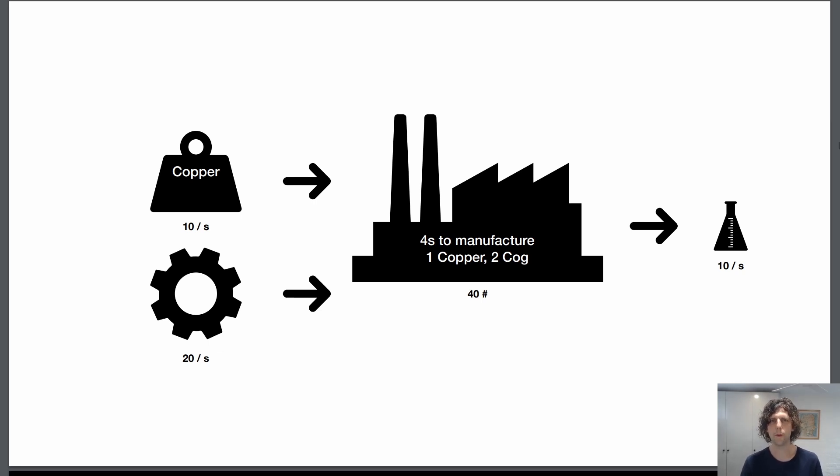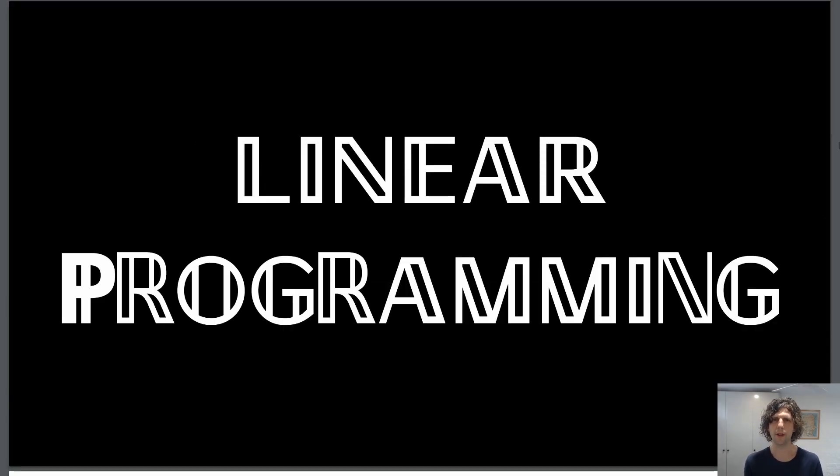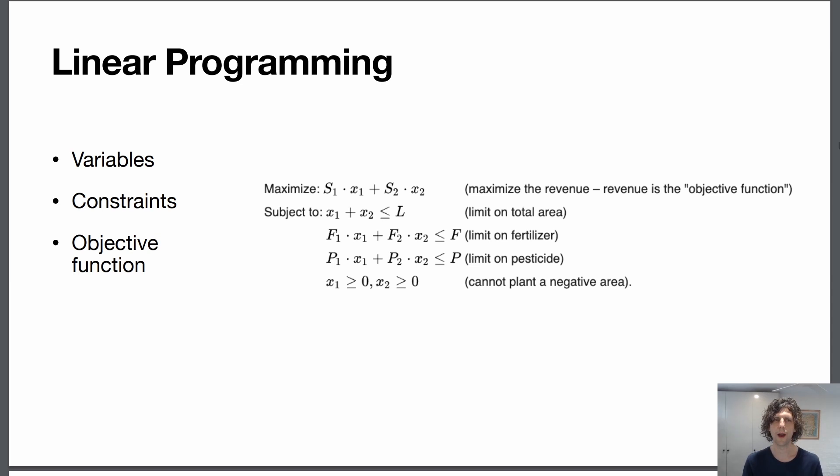But as this gets more complicated you need a bigger tool and that bigger tool is linear programming. This provides a really neat way of solving this problem for complicated recipe chains. In linear programming you have variables, constraints, and an objective function.